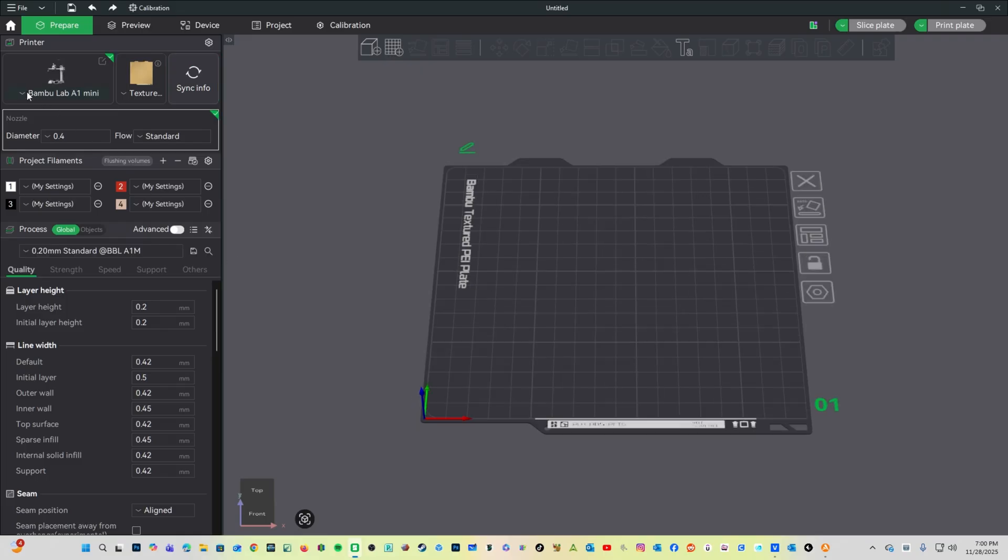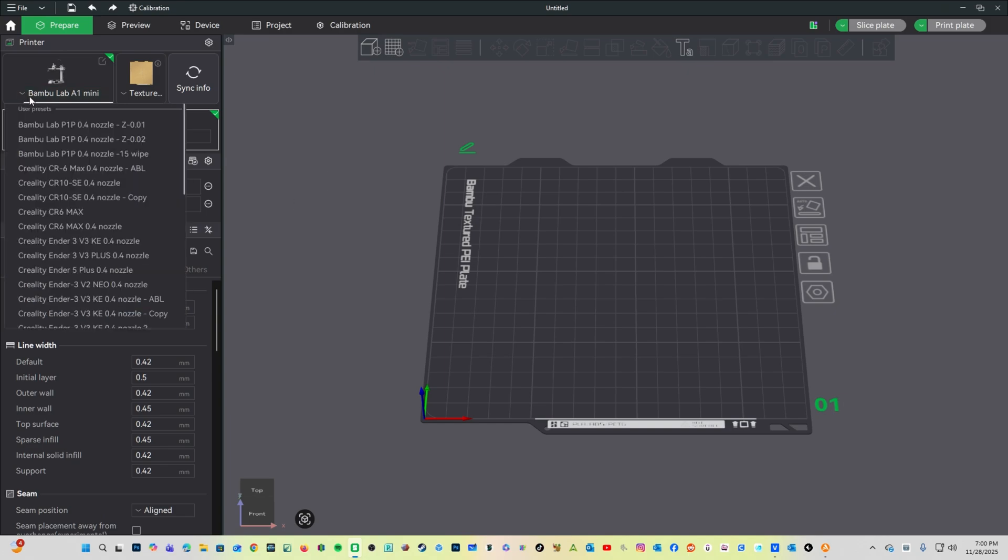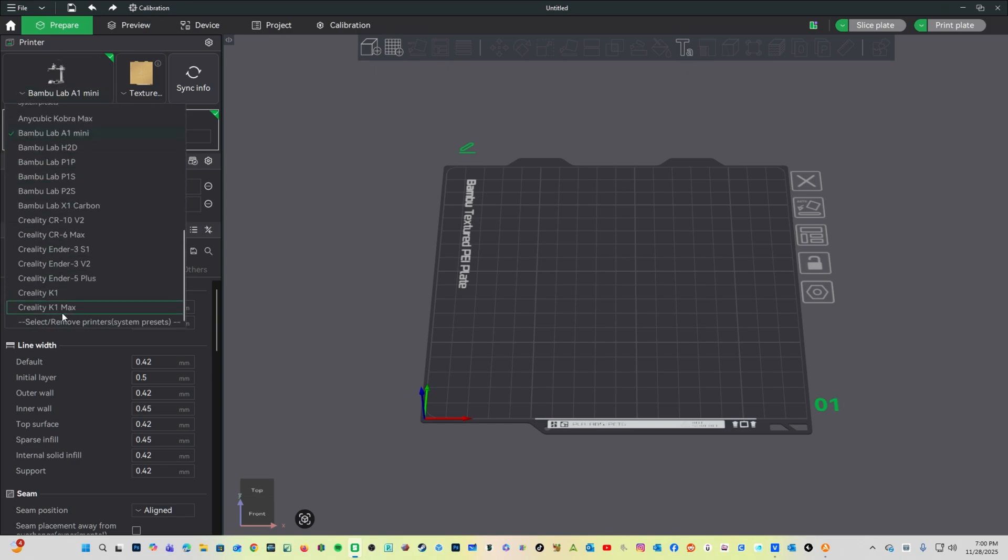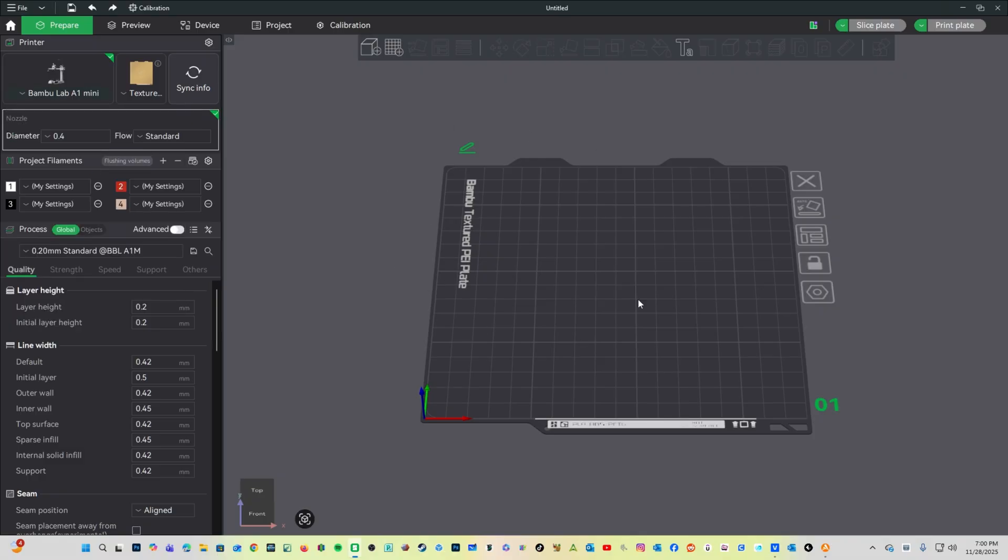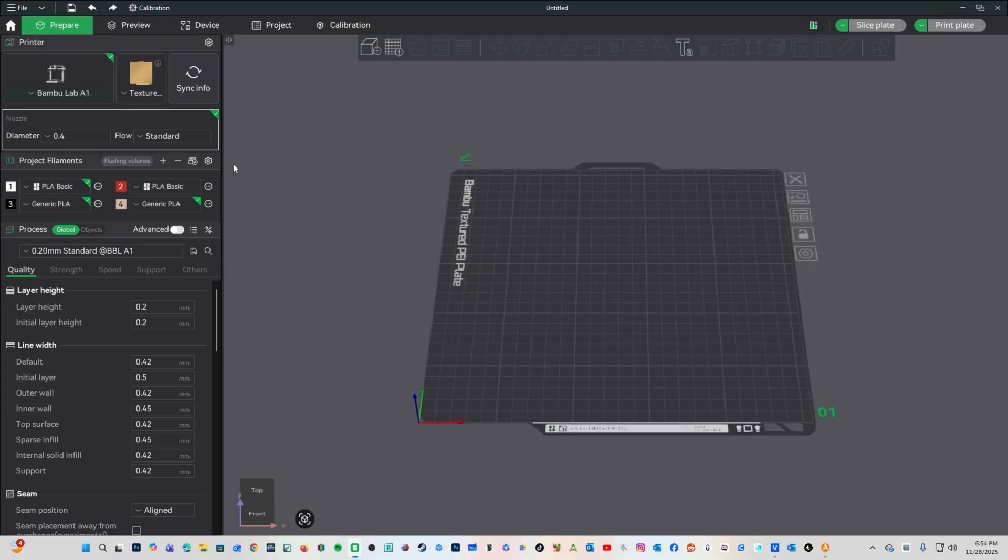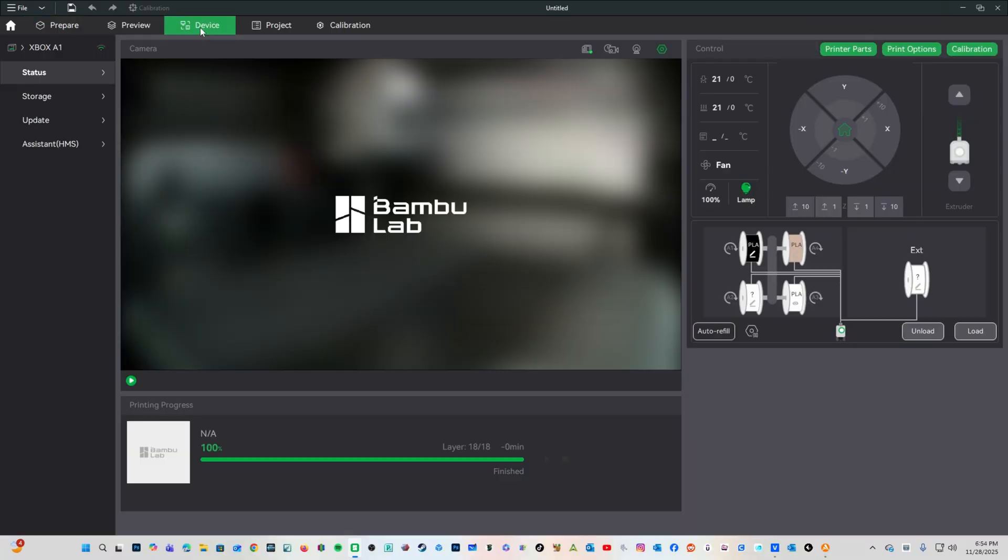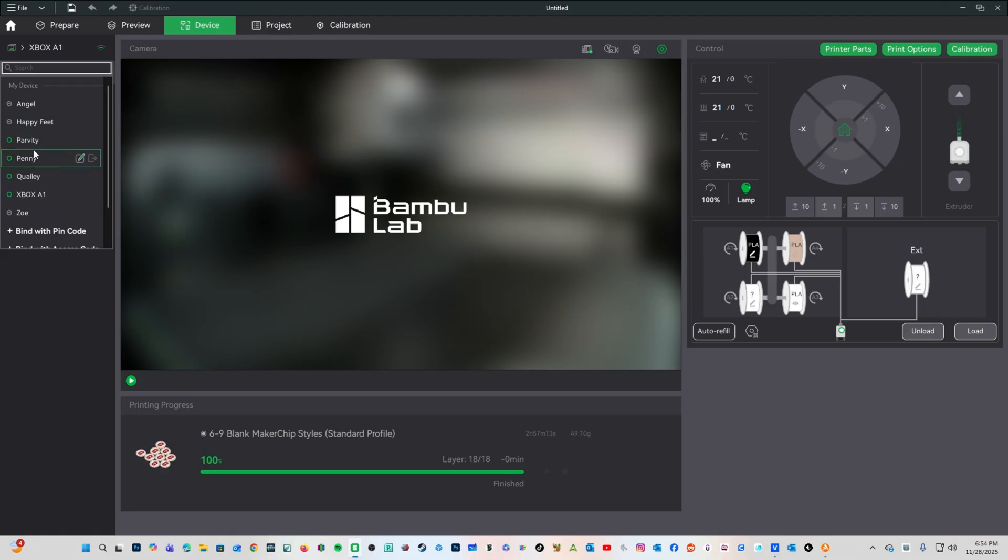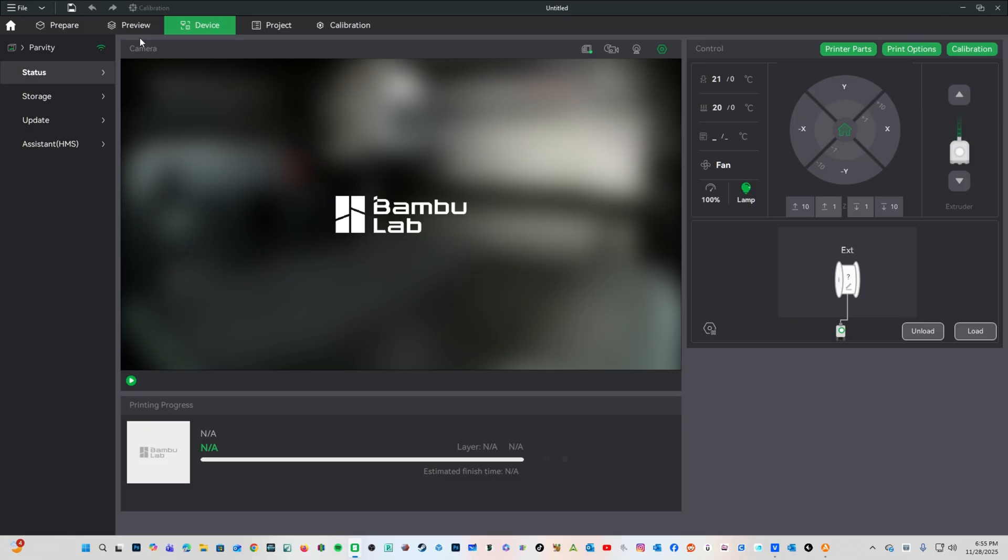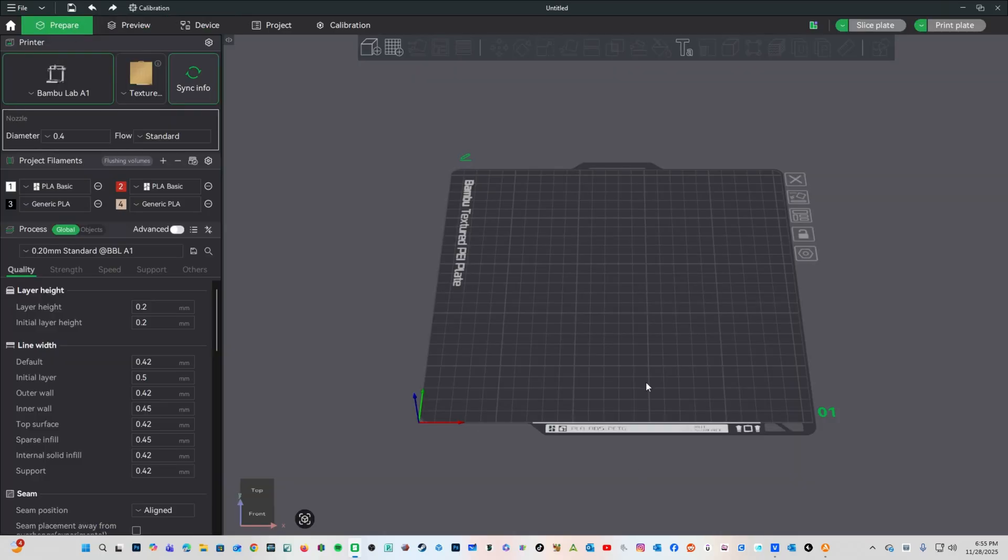Your A1 Mini will immediately be selected. If you have multiple printers, you will need to find it in the pull down and click to activate it. Here in the Device tab, make sure the name of your Bambu A1 is chosen. Mine was called Parvati. Click on that. Return to the Prepare screen and you are now ready to slice for your Bambu Lab A1 Mini.